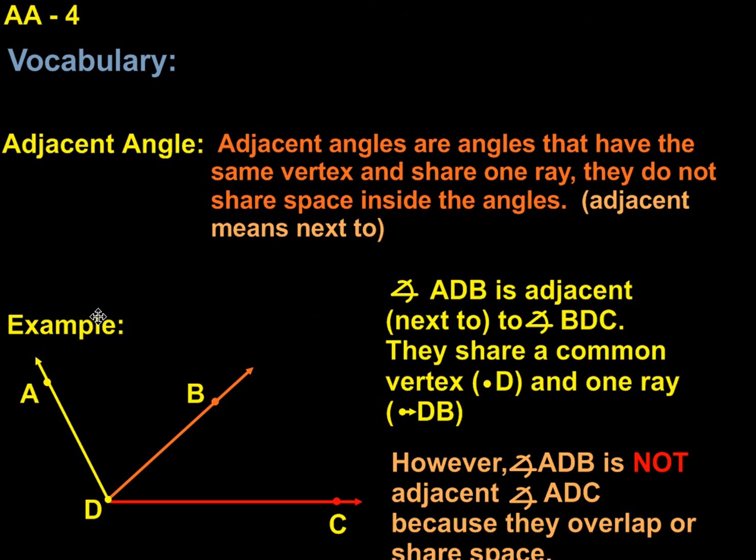We'll start by reviewing what an adjacent angle is. Adjacent angles are angles that have the same vertex and share one ray. They do not share space inside the angles. The word adjacent simply means next to.